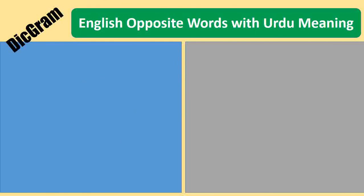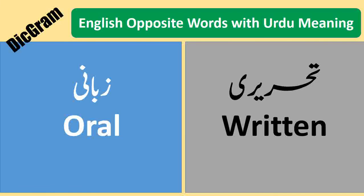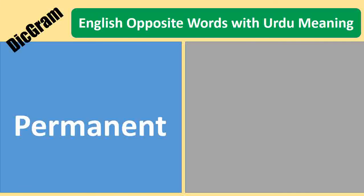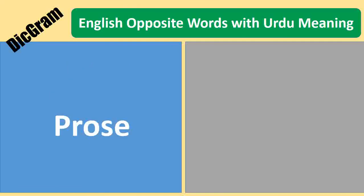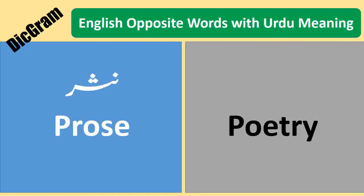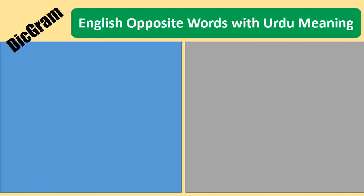Oral — Zabani. Written — Teheriri. Permanent — Mustakil. Temporary — Arzi. Prose — Nasar. Poetry — Shiree.